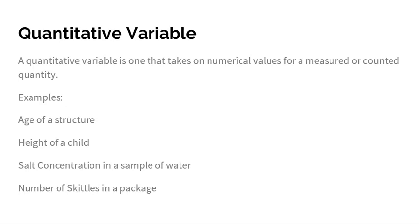Salt concentration in a sample of water. Maybe I have a sample of water, and I measure that there is 15 parts per million of salt in that water. It's going to be something that I have to measure. If I want to figure out how much salt is in water, I've got to measure it somehow. The answer is going to be a number. It's going to have a unit on it. That's going to be a quantitative variable.